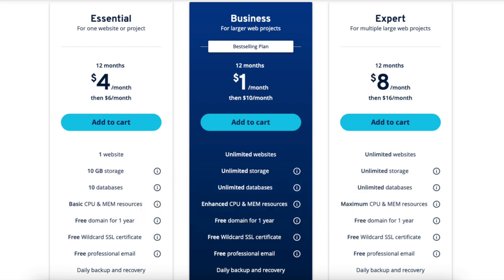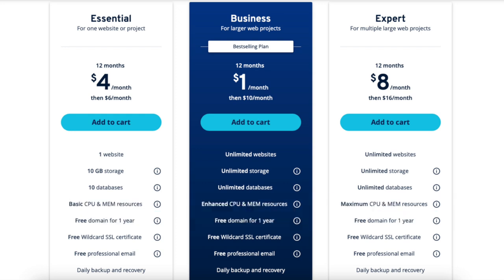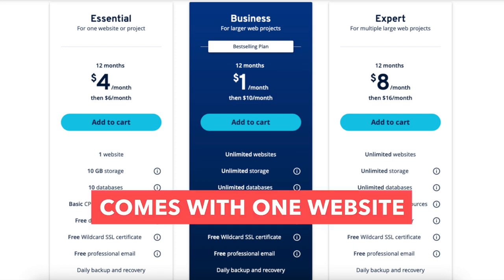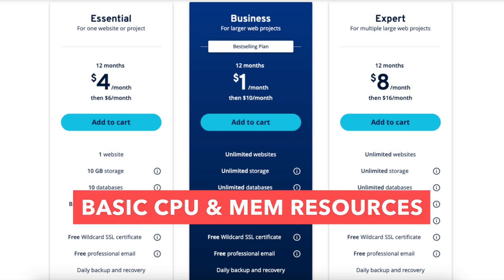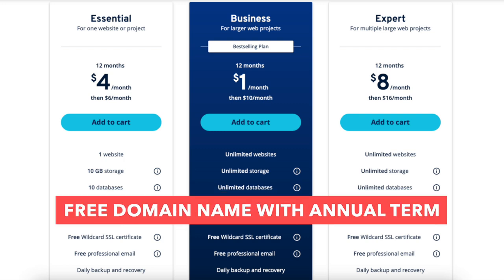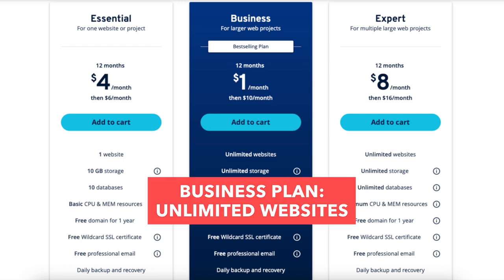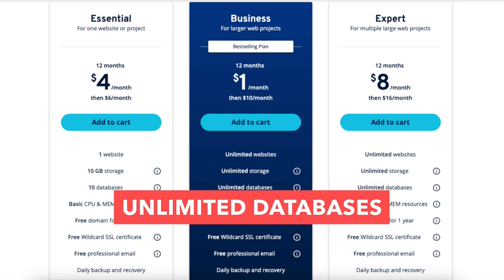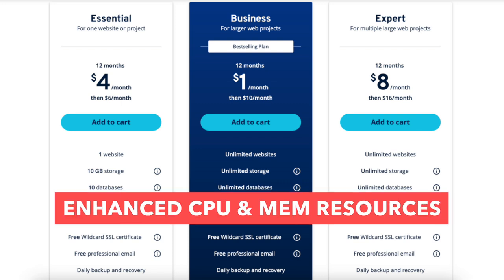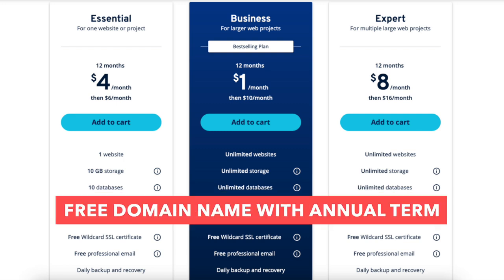The Essential plan is a good plan if you're going to have one website or just starting out. It comes with one website, 10GB of storage, 10 databases, basic CPU and MEM resources, one email account, and a free domain name with an annual term. The Business plan is a good plan as it comes with unlimited websites, unlimited storage, unlimited databases, enhanced CPU and MEM resources for better site performance, one email account, and a free domain name with an annual term.